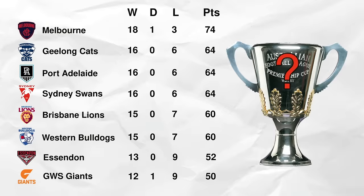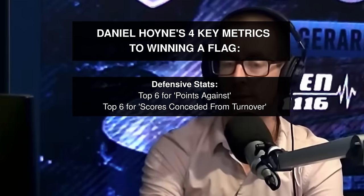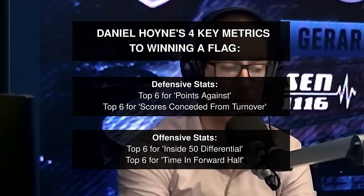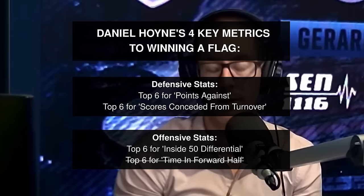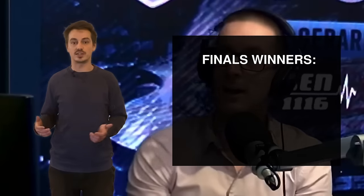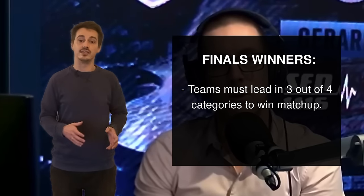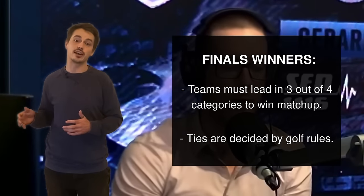Now that we have different finals matchups, we need to look at ways to determine the winner without using match points and shot data. Daniel Hoyne from Champion Data believes there are four key metrics that determine premierships: for defence, you need to be in the top six for points against and scores conceded from turnover; for offence, you need to be in the top six for inside 50s differential and time in forward half — replaced here with the more commonly accepted points for. To get the victory, a team would need to win at least three out of the four categories, and in the event of a tie, we go to golf rules — the best one-to-18 season ranking in each category makes the winner.